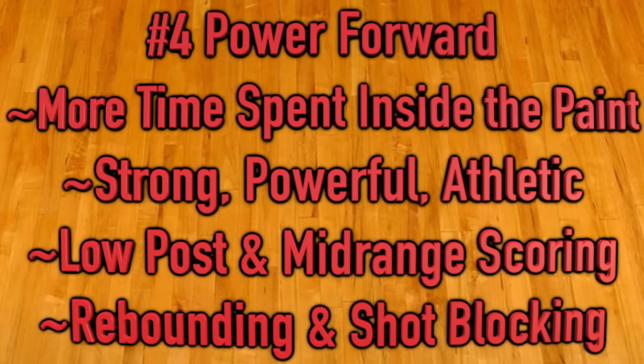The fourth position is the power forward, who like the center is considered a big and spends most of their time in the paint or closer to the basket. The power forward position is where the NBA has drastically shifted over the last 20 years. No longer are the days where great power forwards like KG, Dirk, and Tim Duncan roam the paint. Nowadays the power forward is often essentially just an extra small forward. But traditionally, the power forward is a strong, powerful, athletic player who does most of their scoring in the post. They should have at least a dependable mid-range game, and key qualities include size, post scoring, mid-range shooting, strength, shot blocking, and rebounding.